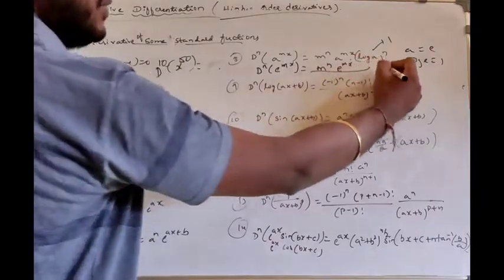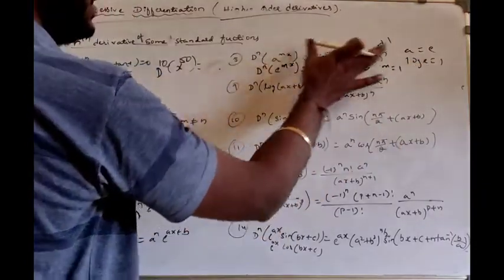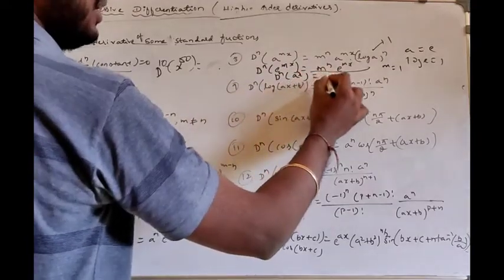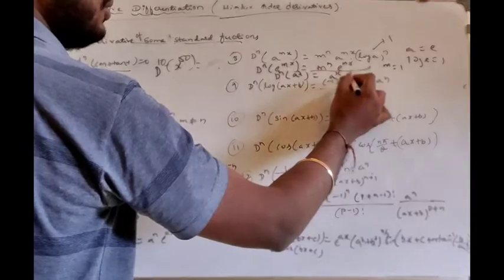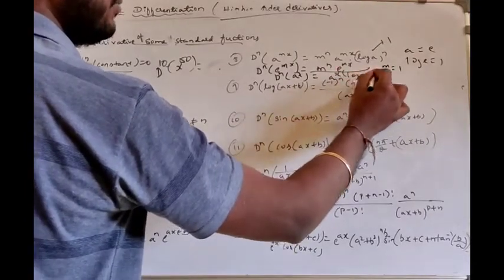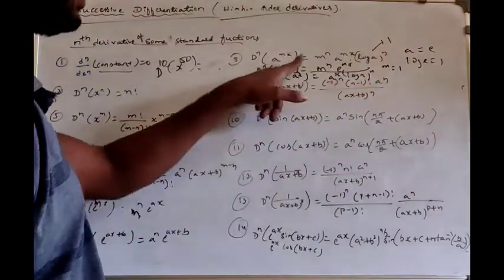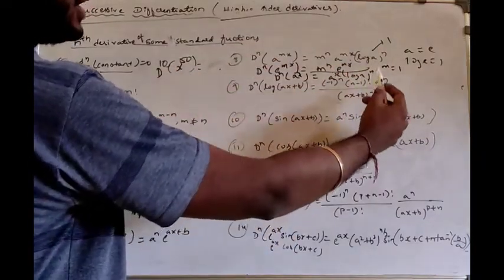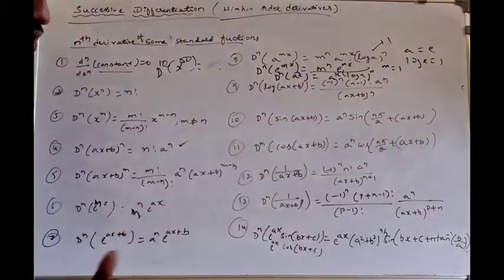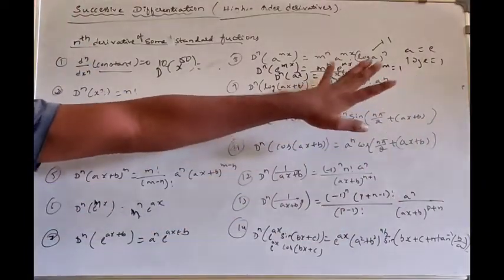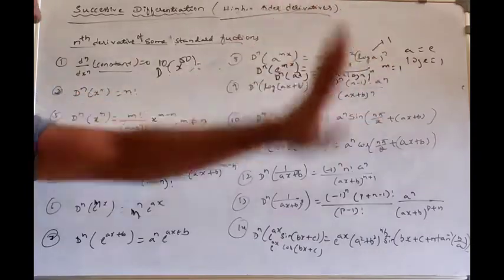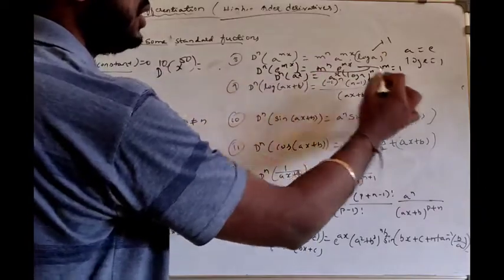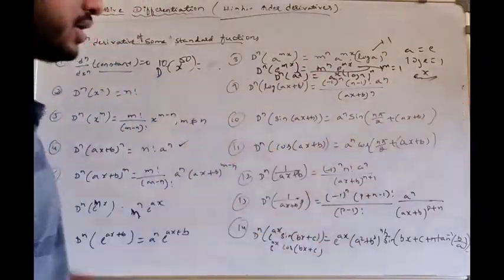Suppose m = 1 and a = e. Then the nth derivative of e^x is 1^n · e^x · (log e)^n. Since log e = 1, this simplifies to just e^x. So the nth derivative of e^x equals e^x.